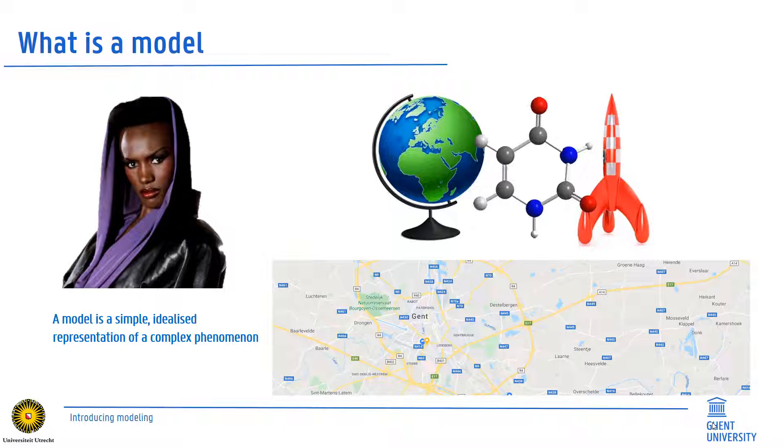The globe, atomic and rocket models on the right are scale models that represent either macroscopic or microscopic elements, but they clearly lack the underlying mechanics or energetic processes that make them function as in reality.